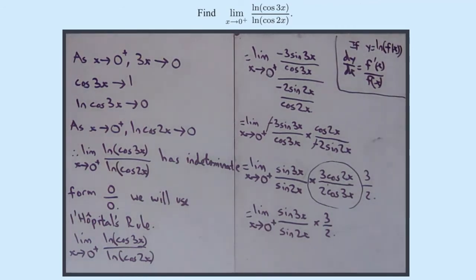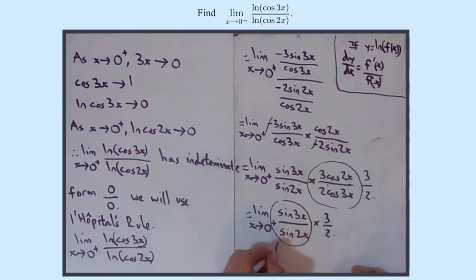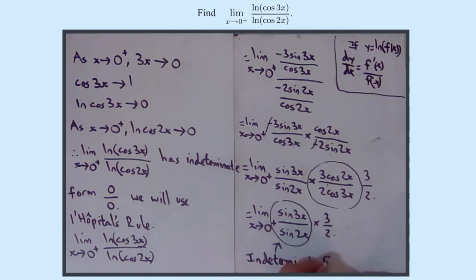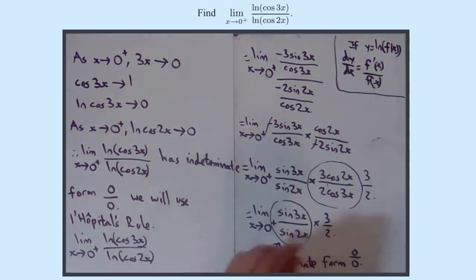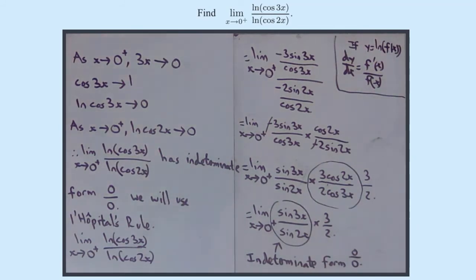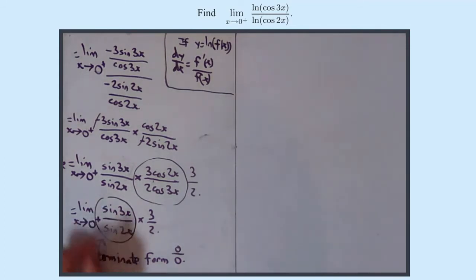If you think about sine, as x approaches 0, 3x and 2x will both approach 0, and the sines of those will also approach 0. So this particular limit again has indeterminate form 0 over 0. Now we have a choice — you could use the fundamental trigonometric limit and manipulate it into sine 3x over 3x times 2x over sine 2x. Or, since this lesson is about L'Hôpital's rule, we will apply L'Hôpital's rule again on this sine limit.